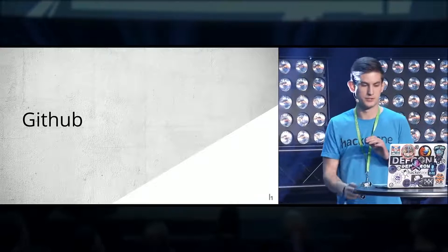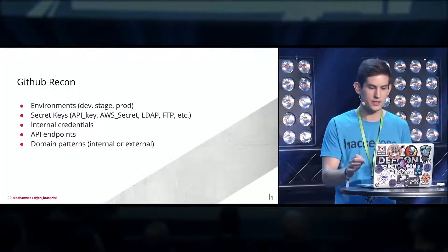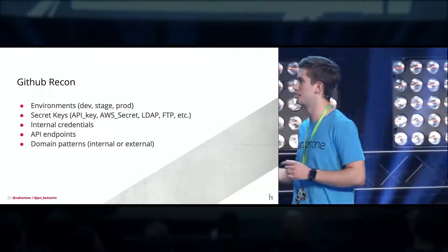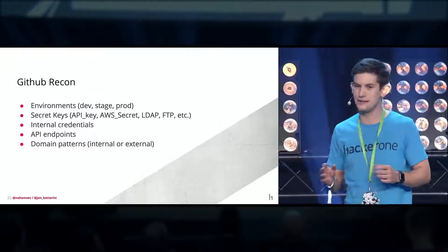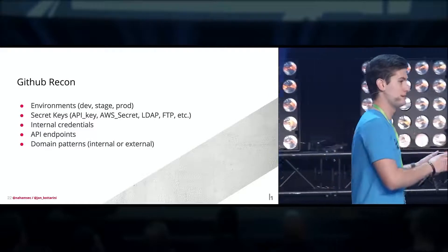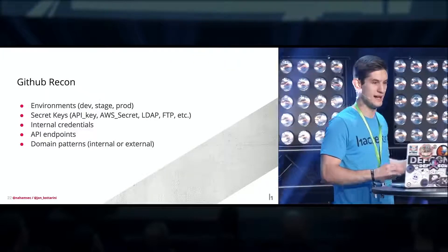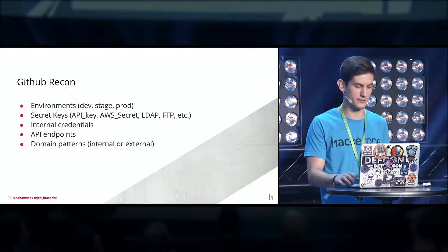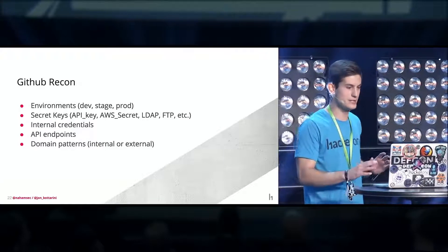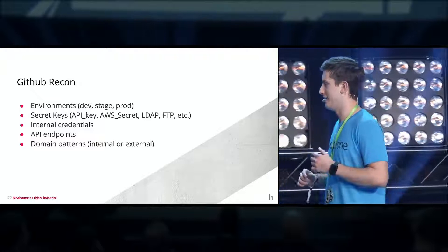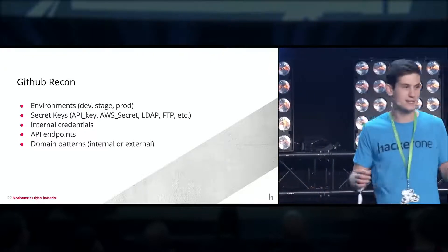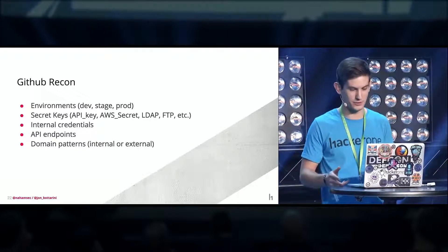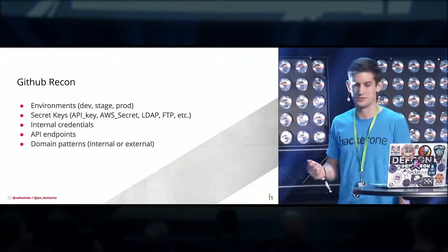Another really cool way to do reconnaissance is through GitHub. GitHub recon is pretty similar to Amazon — there are different environments before they push to production. GitHub is a goldmine for snippets of code that never really make it to the end. You'll have half-finished snippets, half-finished API calls, and endpoints all over the place. I've found everything from secret keys to internal credentials, database backups with database keys, and domain patterns for both internal and external domains.